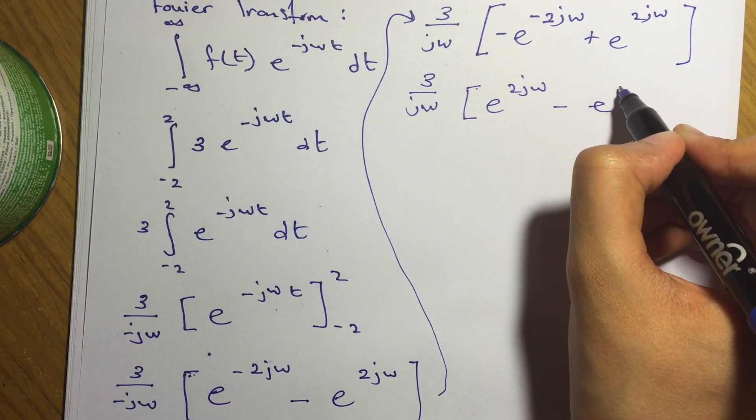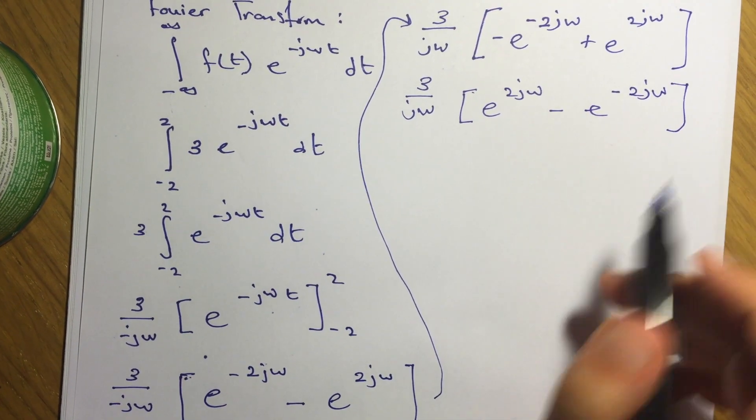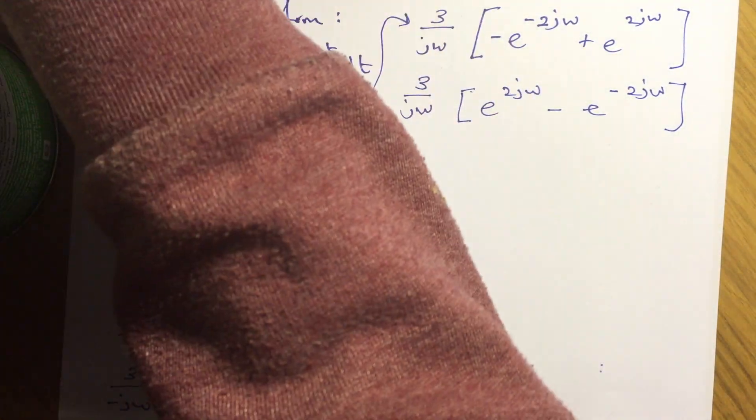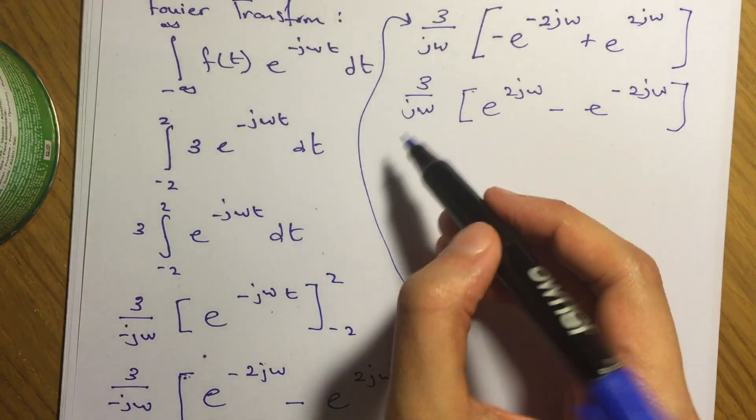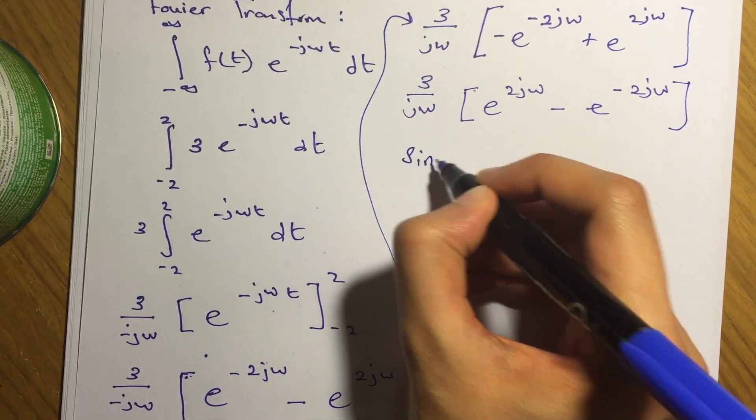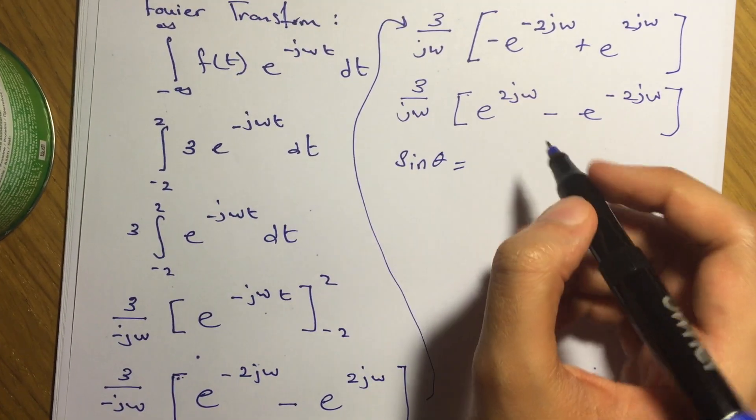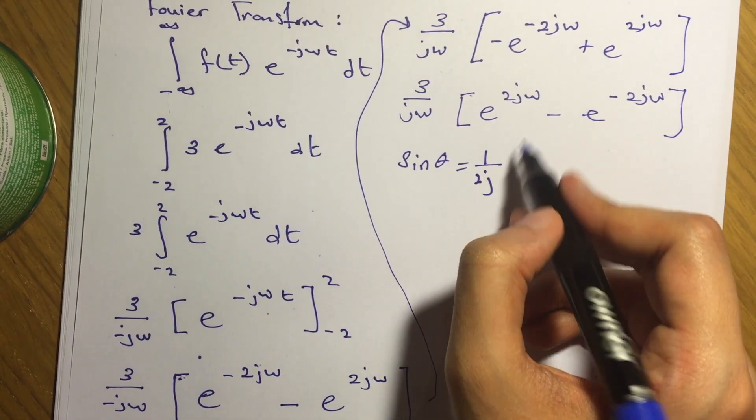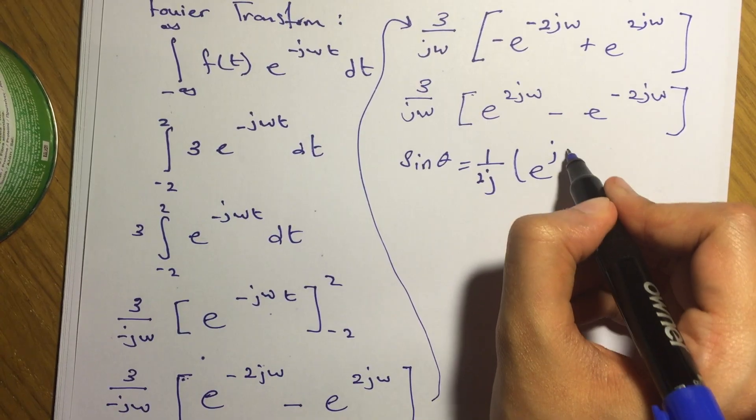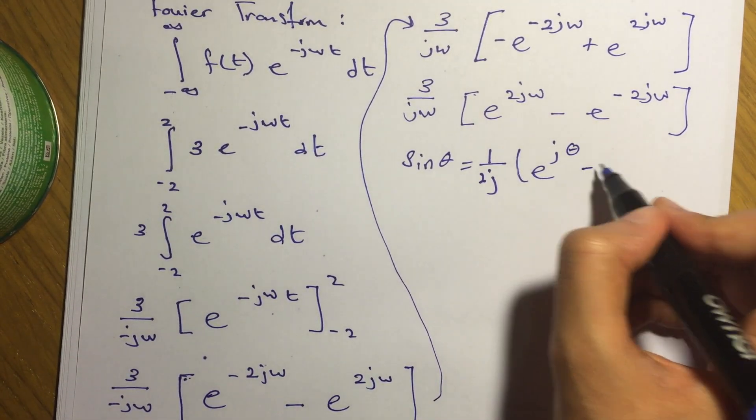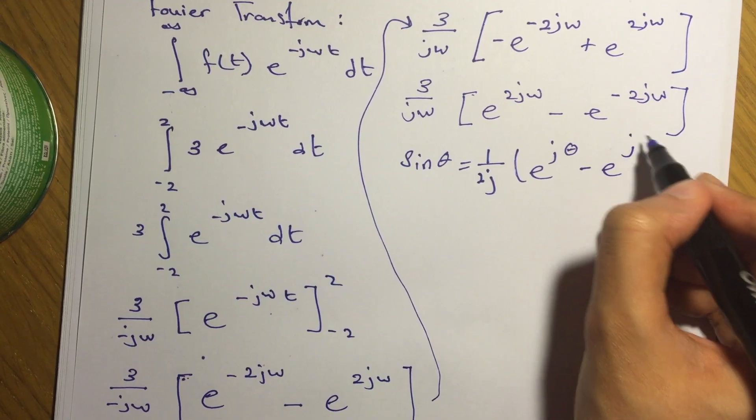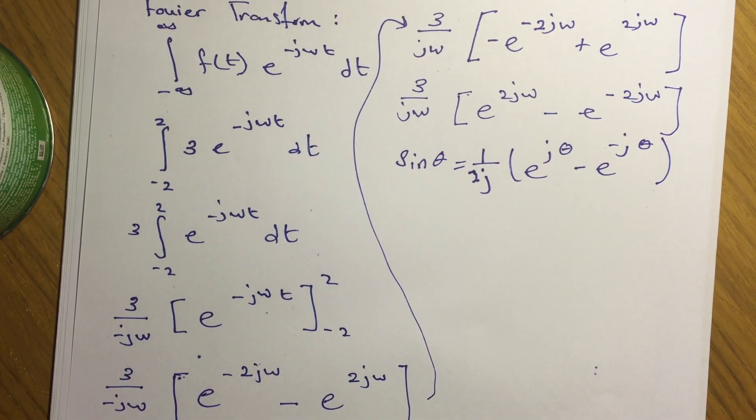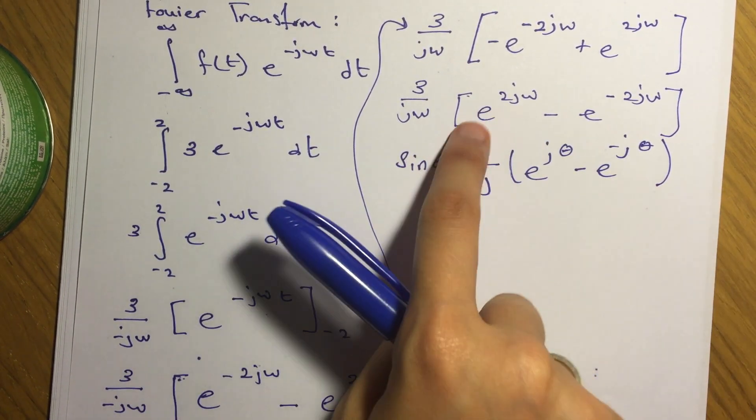You can see this is a complex number. Complex numbers have a formula which states that sine of delta is 1 over 2j times e to the j delta minus e to the negative j delta. So you can see that this is very similar to this.